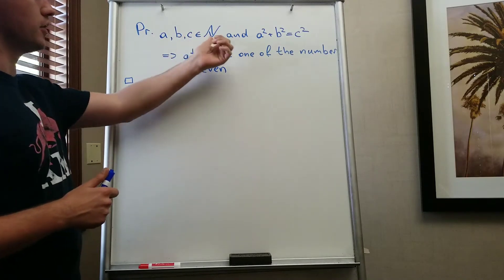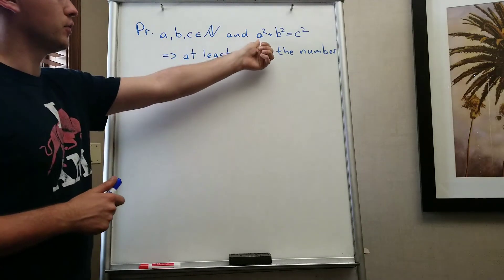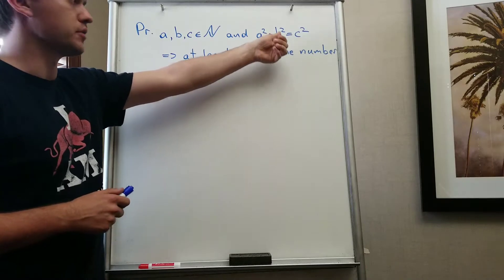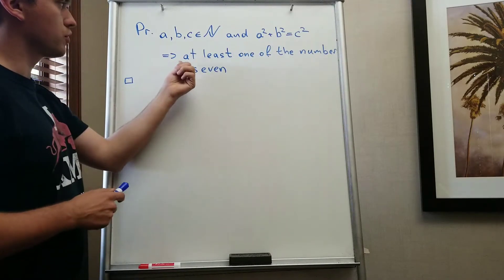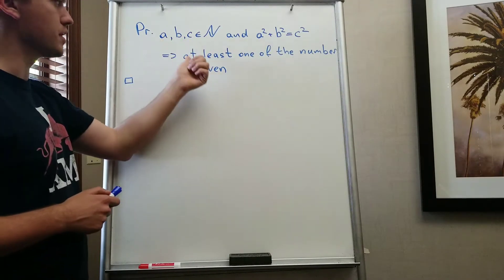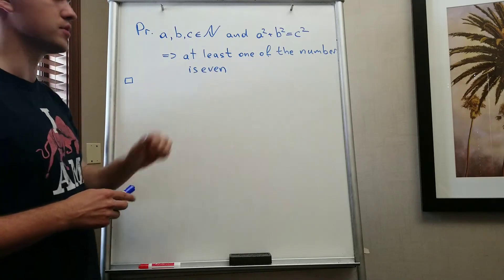So we have that a, b, and c are natural numbers and we know that a squared plus b squared equals c squared. And we want to show that among these three numbers at least one of this number must be even.